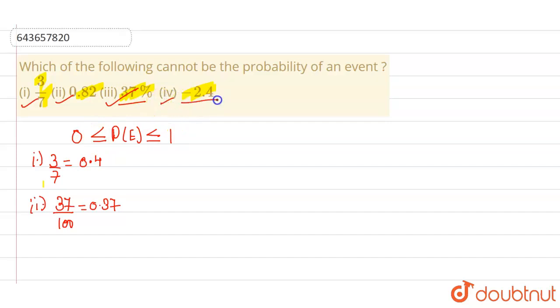Option 4, minus 2.4. This value is less than 0. Therefore, it cannot be the probability and your answer will be option 4, minus 2.4. That's all from my side. Thank you everyone, have a great day.